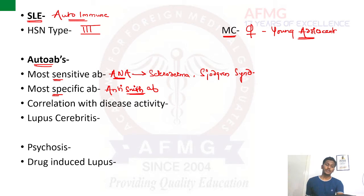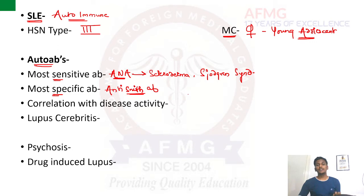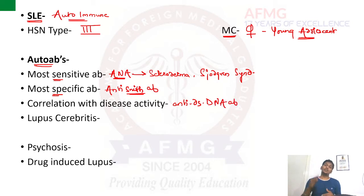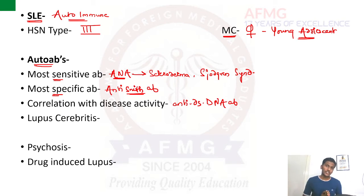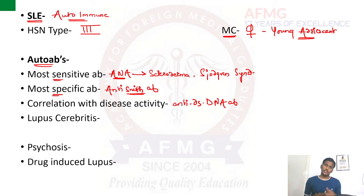The autoantibody that correlates with disease activity is anti-double-stranded DNA antibody. The titers of this anti-double-stranded DNA antibody keep fluctuating, and that is suggestive of disease activity in the patient. High titers suggest the patient is likely suffering from an SLE exacerbation.